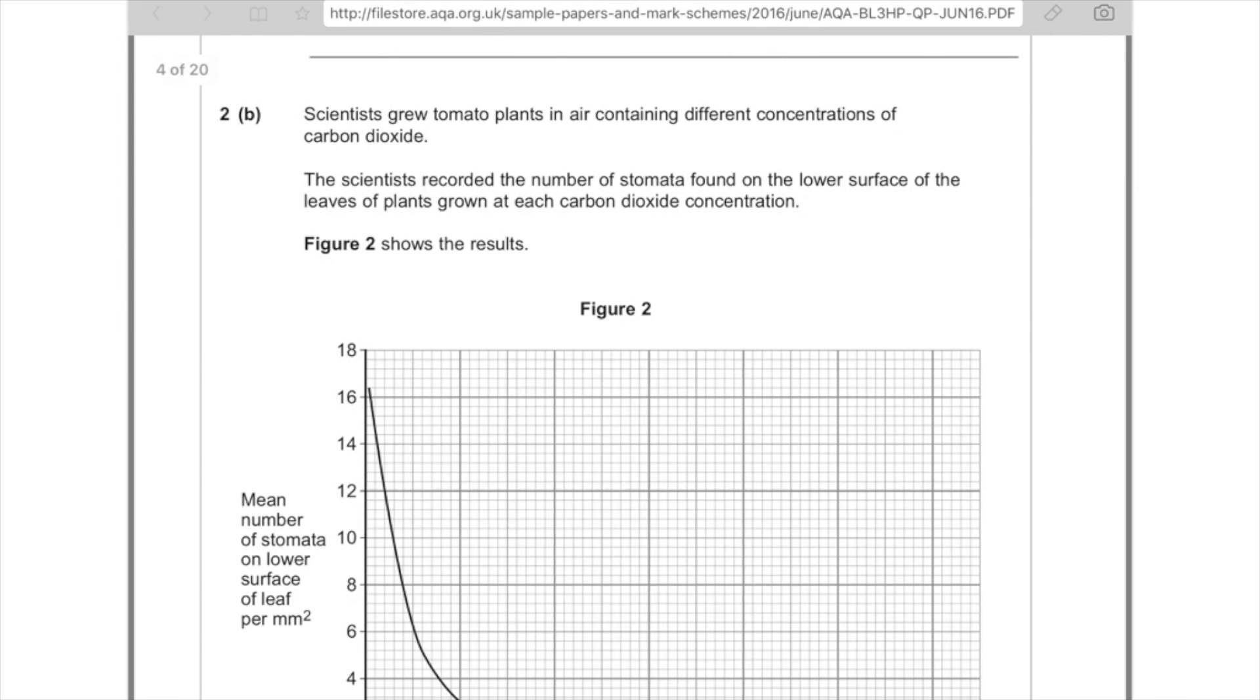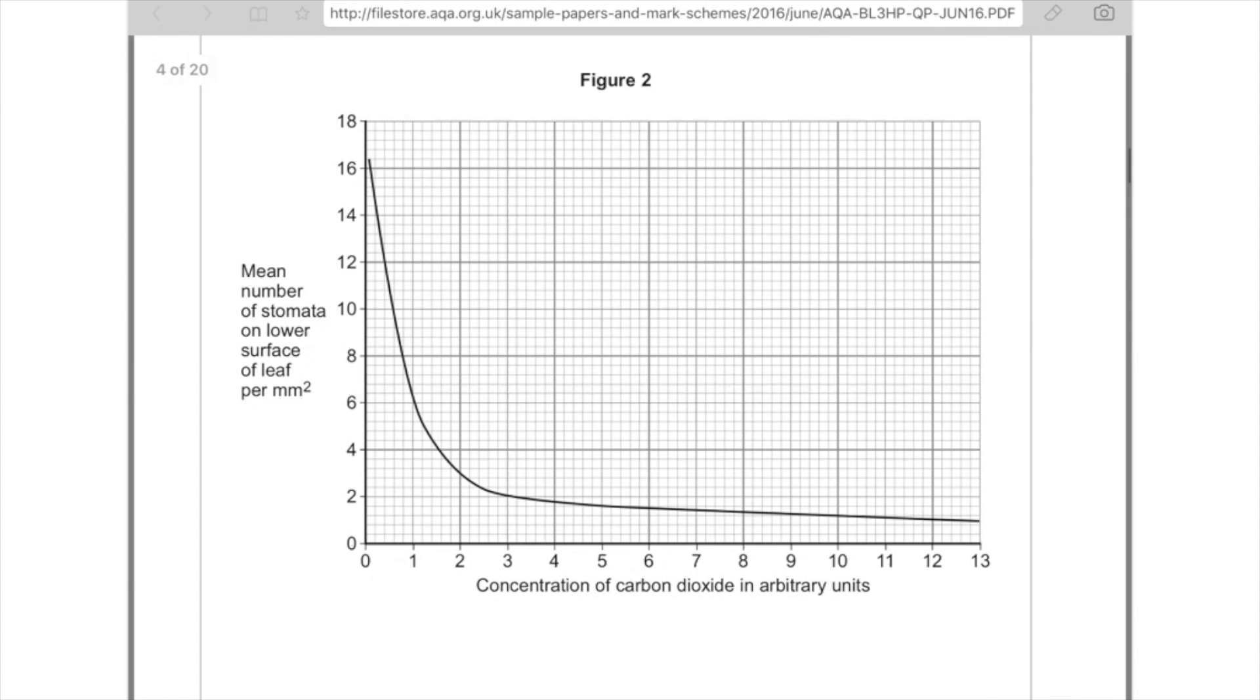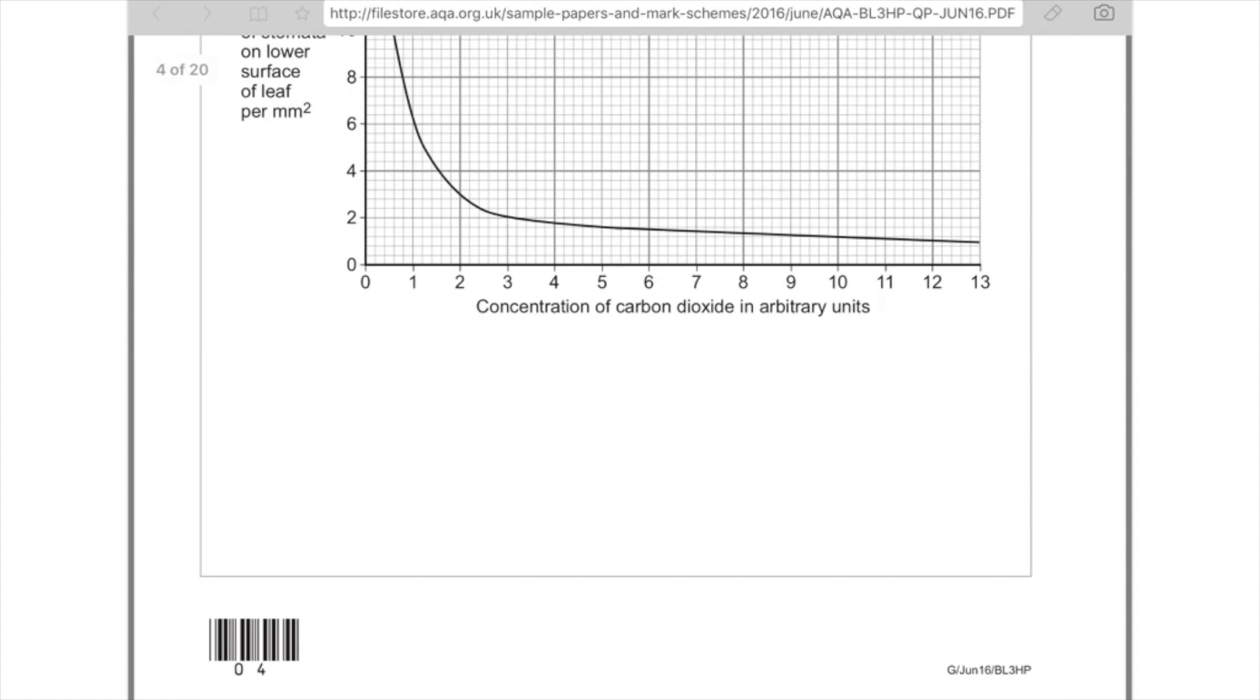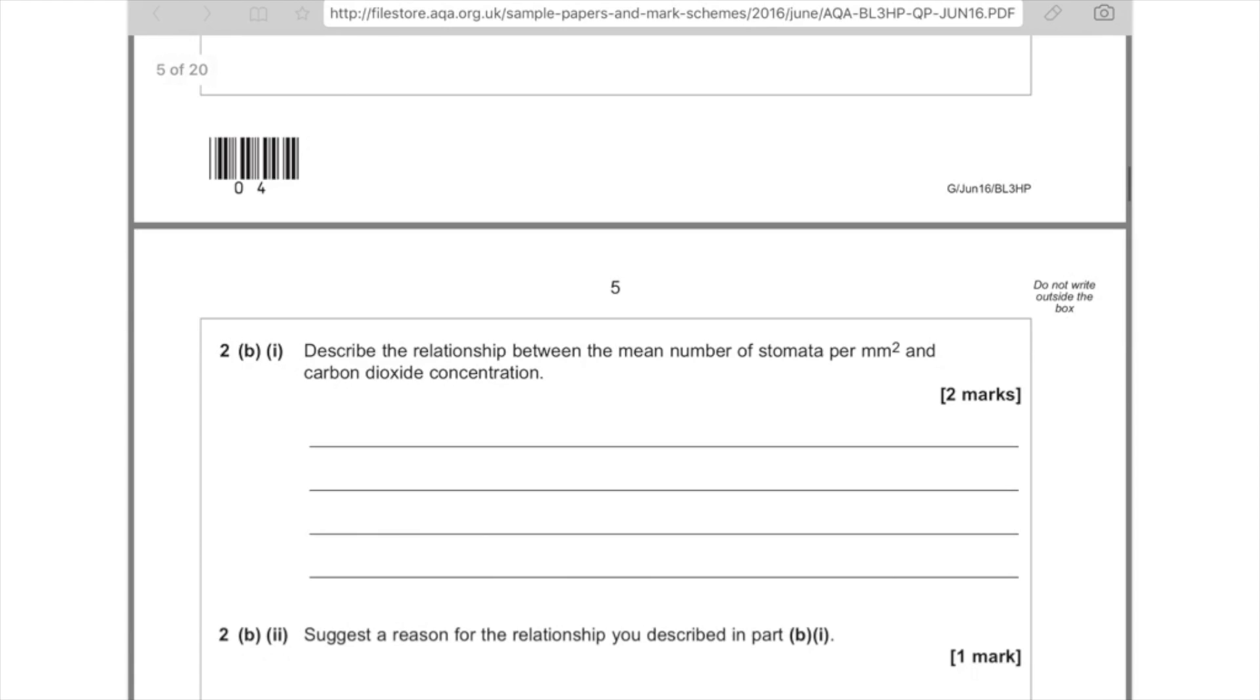2B, scientists grew tomato plants in air containing different concentrations of carbon dioxide. The scientists recorded the number of stomata found on the lower surface of the leaves of plants grown at each carbon dioxide concentration. So we can see at zero concentration of carbon dioxide, we can see there's a large number of stomata, over 16. And then when you get up to 13 units of carbon dioxide, so a very high level of concentration, you see far fewer stomata, so approximately 1. So I'm just doing that to make sure I know what the graph's about before I get to the question.